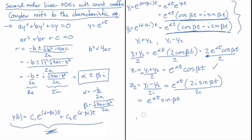My general solution, instead of the unnecessarily complicated one, can be written as y(t) = e^(αt)(c₁cos(βt) + c₂sin(βt)).